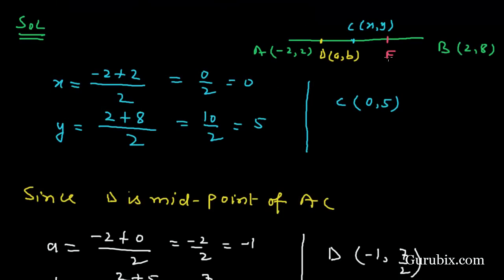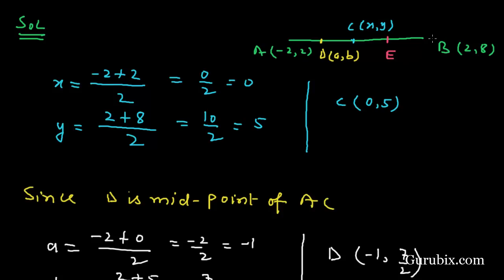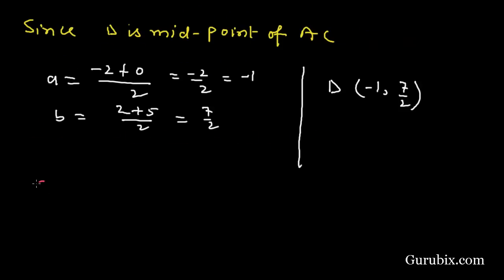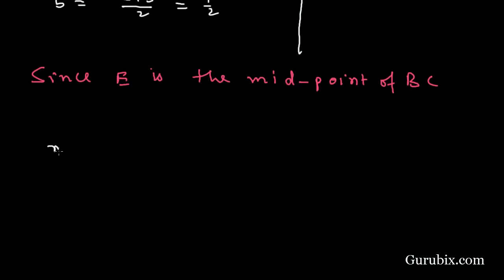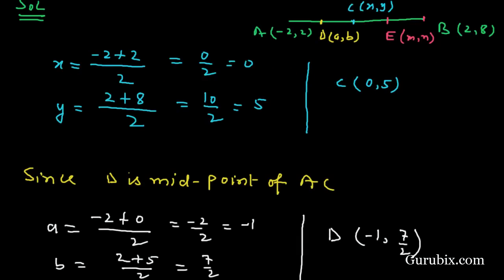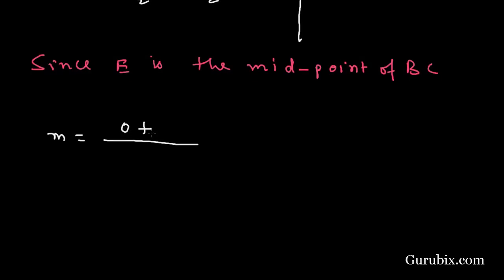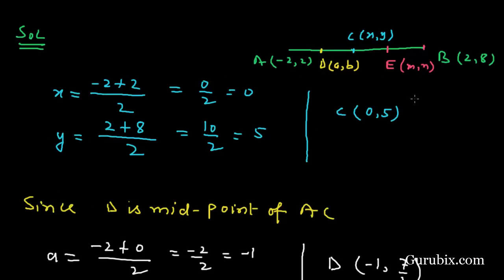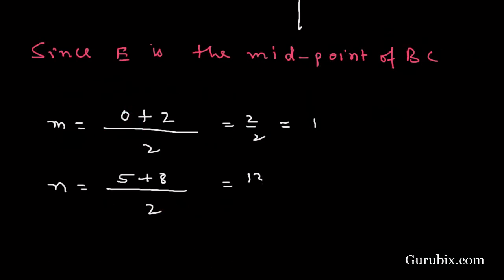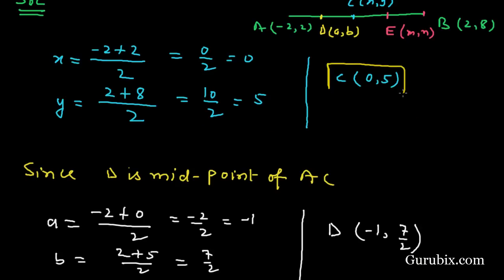Suppose E is the midpoint of CB, and let the coordinates of E be (m, n). Since E is the midpoint of BC, m = (0 + 2) / 2 = 2 / 2 = 1. And n = (5 + 8) / 2 = 13 / 2. Therefore, the coordinates of E are (1, 13/2).